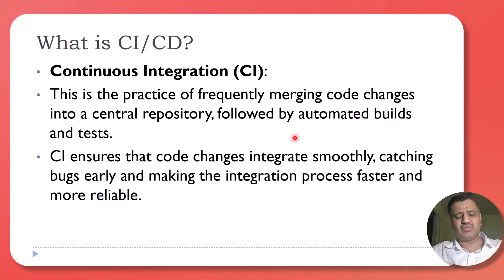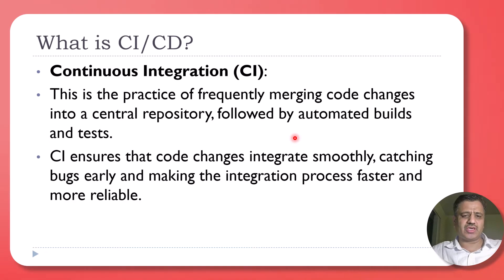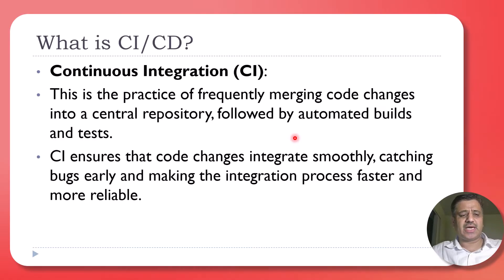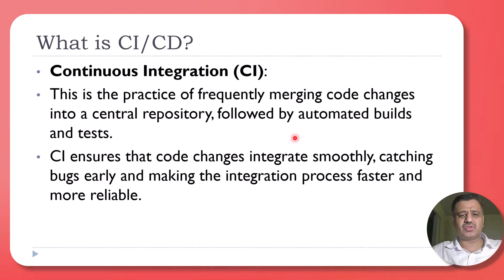When you merge these child branches with the main branch, there are some test cases that we wish to run. With GitHub Actions, we can automate that process so that certain test cases will automatically run whenever you issue the merge command from a child branch to the main branch.